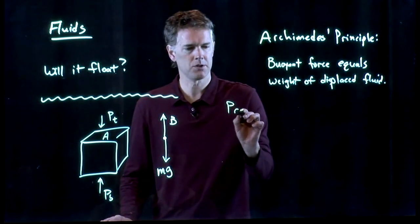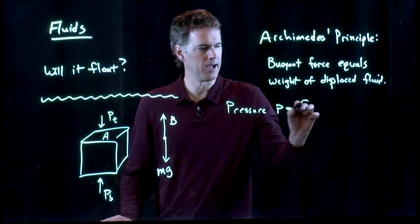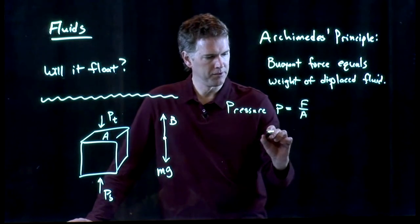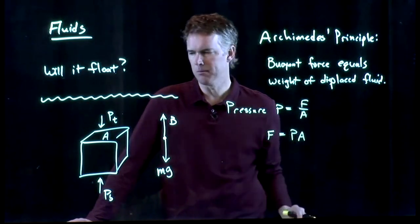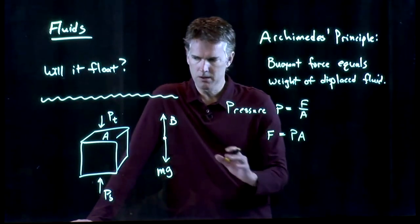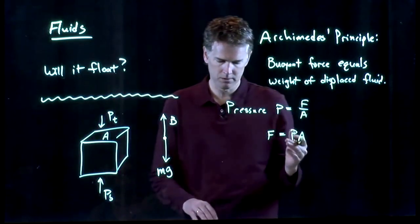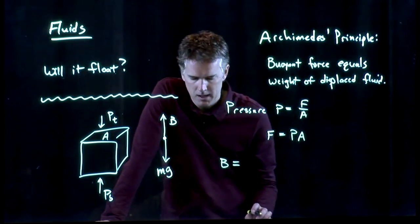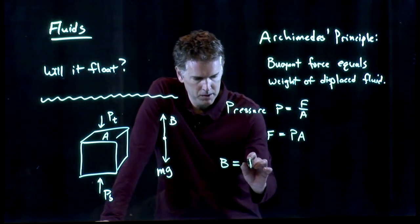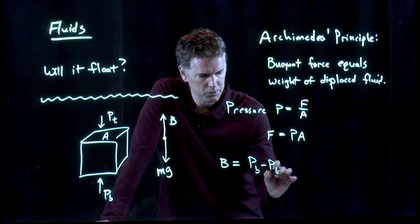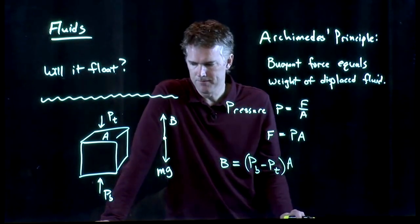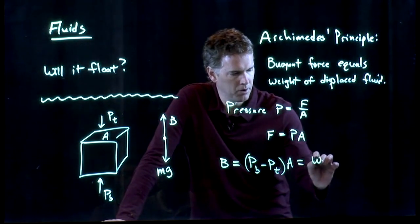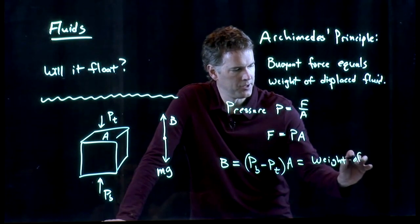And we know what pressure is. Pressure is just force divided by area. So, force is therefore pressure times area. And if I think about these pressures at the top of the box and the bottom of the box, we know that the buoyant force has got to be equal to mg if this whole thing is at rest. But it's also equal to the difference between the pressure at the top and the pressure at the bottom. Pb going up, Pt going down. And so, this has to be equal to the weight of the displaced fluid.